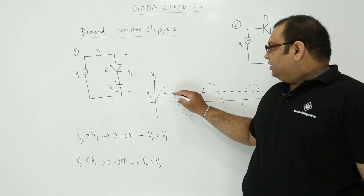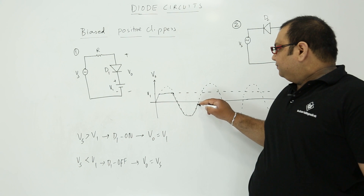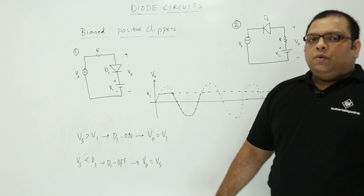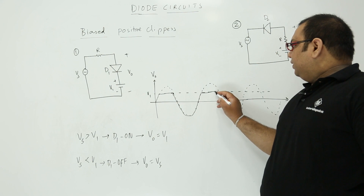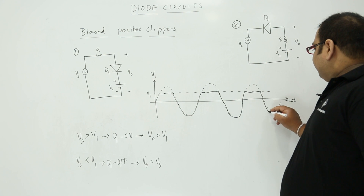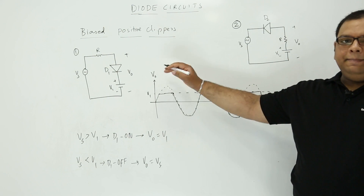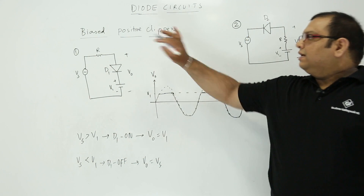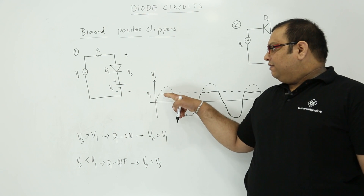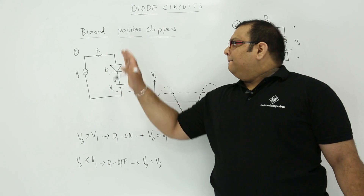On the negative side, the input is also less than V1, so we will have the waveform following the input. Again, when input goes more than V1, the output is clipped to V1 only. The negative peaks are reproduced as is. If you observe the output waveform, the positive peaks are clipped away, so this is a positive clipper circuit. If you take V1 as 0, it is just like the basic positive clipper discussed in the earlier session. So this is one biased positive clipper.